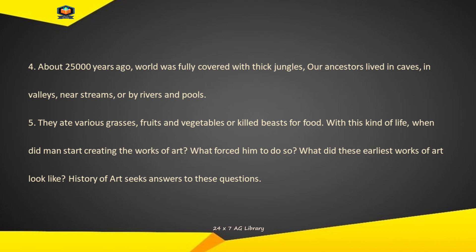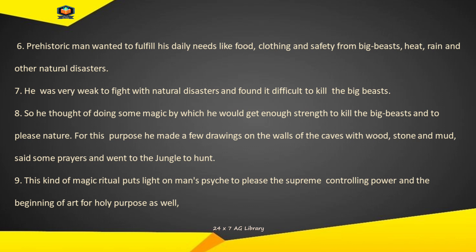Ve tarah tarah ki ghaas, phal aur sabziyaan khaate the ya bhojan ke liye jaanvaron ko maarte the. Is tarah ke jeevan ke saath manushya ne kala ki kritiyon ka nirmaan kab shuru kiya? Use aisa karne ke liye kya majboor kiya? Kala ke ye shuruaati kaam kis tarah dikhte the? Kala ka itihas in sawaalon ke jawaab talaashta hai. Point 6: Prehistoric man wanted to fulfill his daily needs like food, clothing, and safety from big beasts, heat, rain, and other natural disasters.